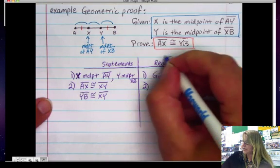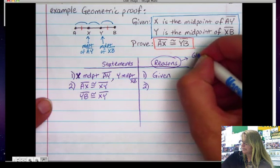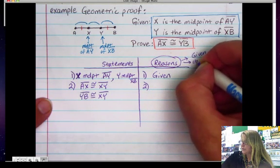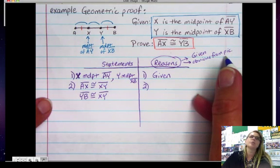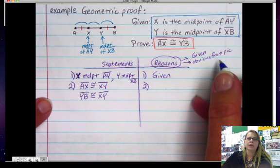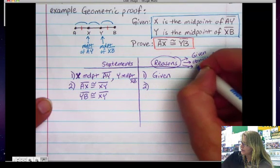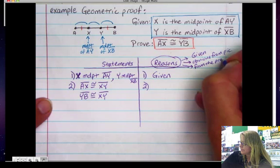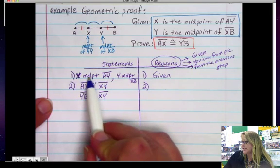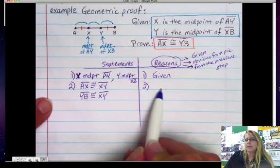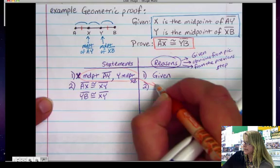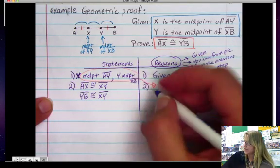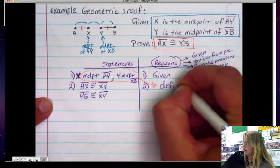usually when you're looking for a reason, you're either, so for reasons, you're either going to have it be a given statement, or it's going to be obvious from the picture. In which case, my reasons would be things like vertical angles, or linear pair theorem, or supplementary, or that sort of thing. Or it's going to be from the previous step. And in this case, my previous step, this magic word midpoint here, tells me my reason. So I'm going to look at this to help me know what my reason is going to be. My reason has to do with midpoint, and it's just simply definition of midpoint.